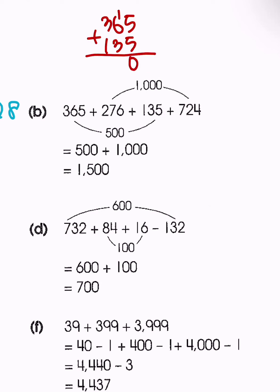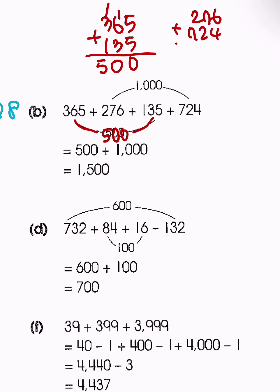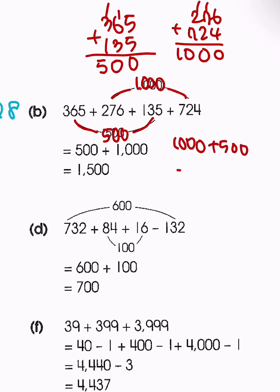Then we have a number ending in 6 and one ending in 4 — that also gives an ending of 0. Adding those together gives us 1,000. So it's really easy to add 500 and 1,000 together, giving us an answer of 1,500.